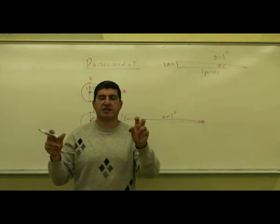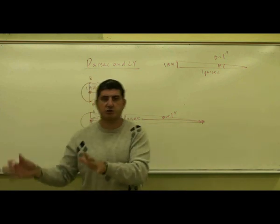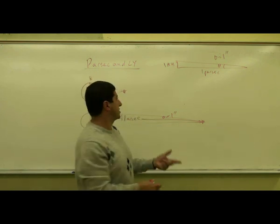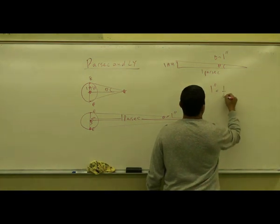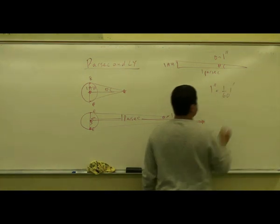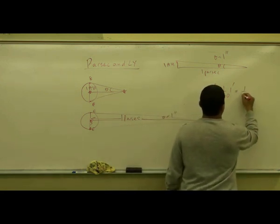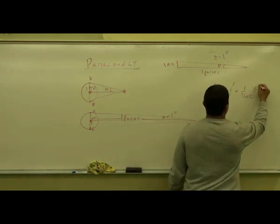It's one sixtieth of one sixtieth of one degree. So it's kind of like the units of seconds, which is 3600 seconds in an hour. So one arcsecond is one sixtieth of one arcminute, which is one 3600th of one degree.